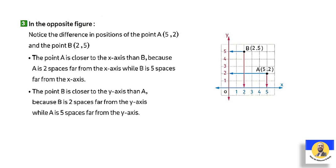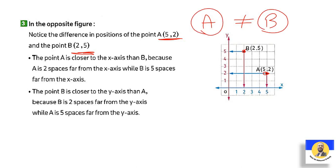Is there a difference between (5, 2) and (2, 5)? Yes, of course. Point A at (5, 2): move five on the x-axis then go up two steps. Point B at (2, 5): move right two steps then go up five steps. They are not equal — point A is closer to the x-axis, while point B is closer to the y-axis.